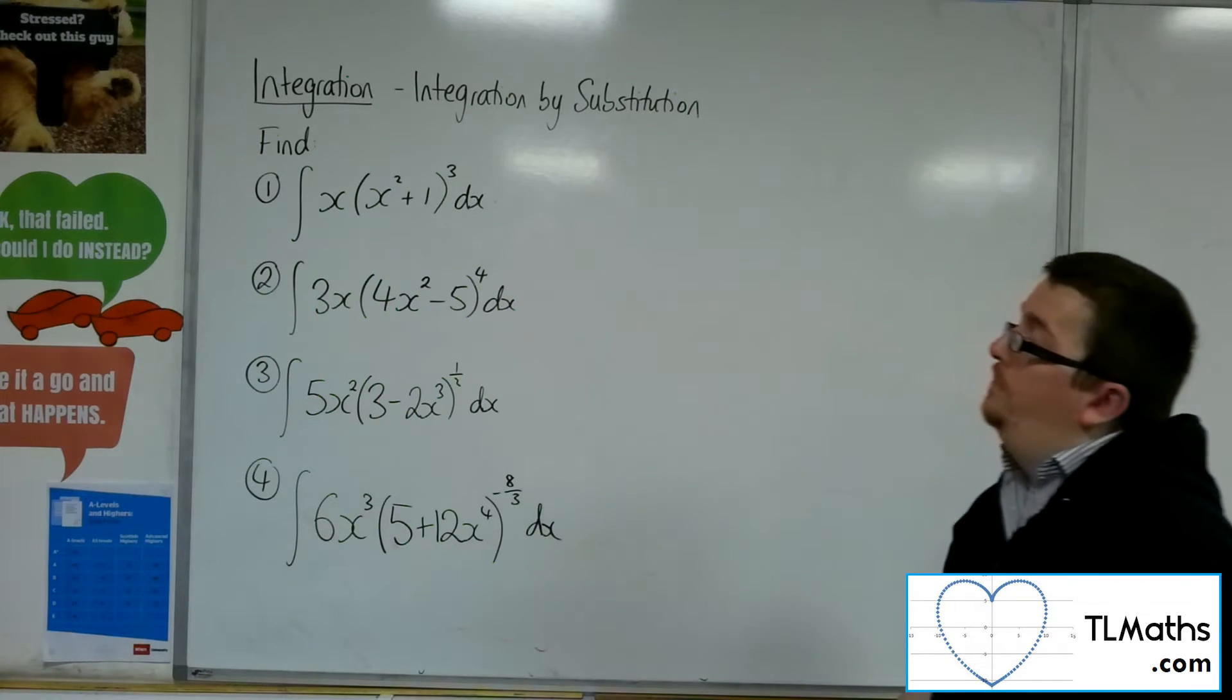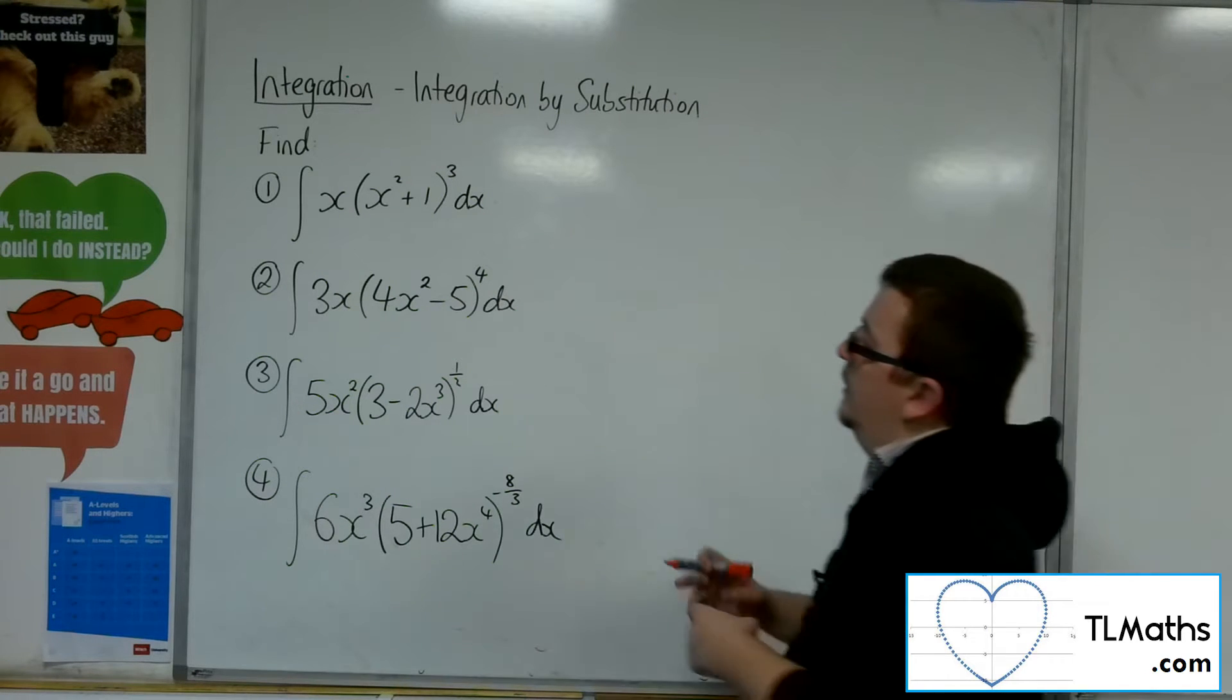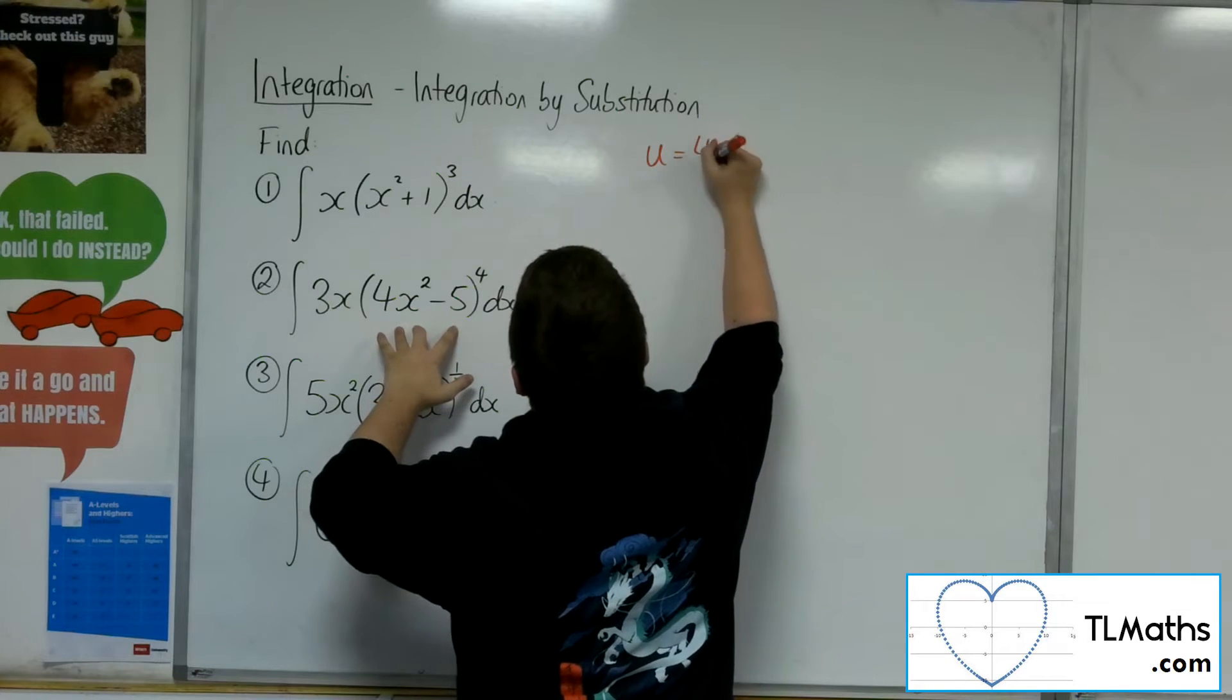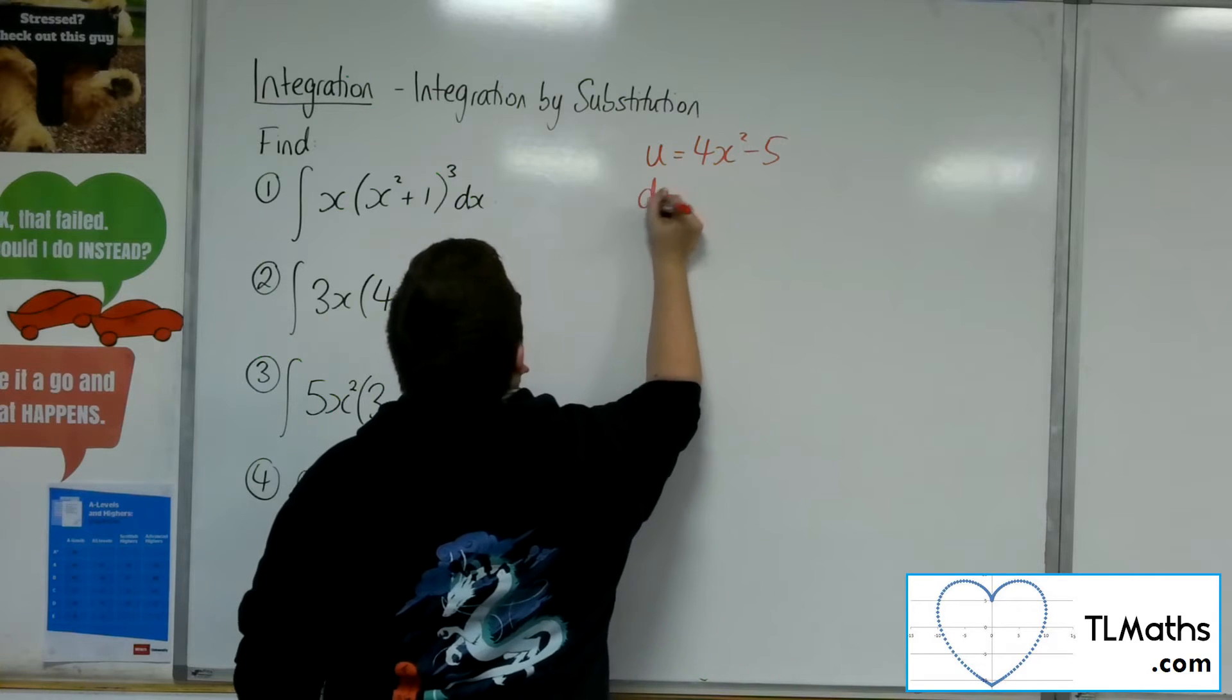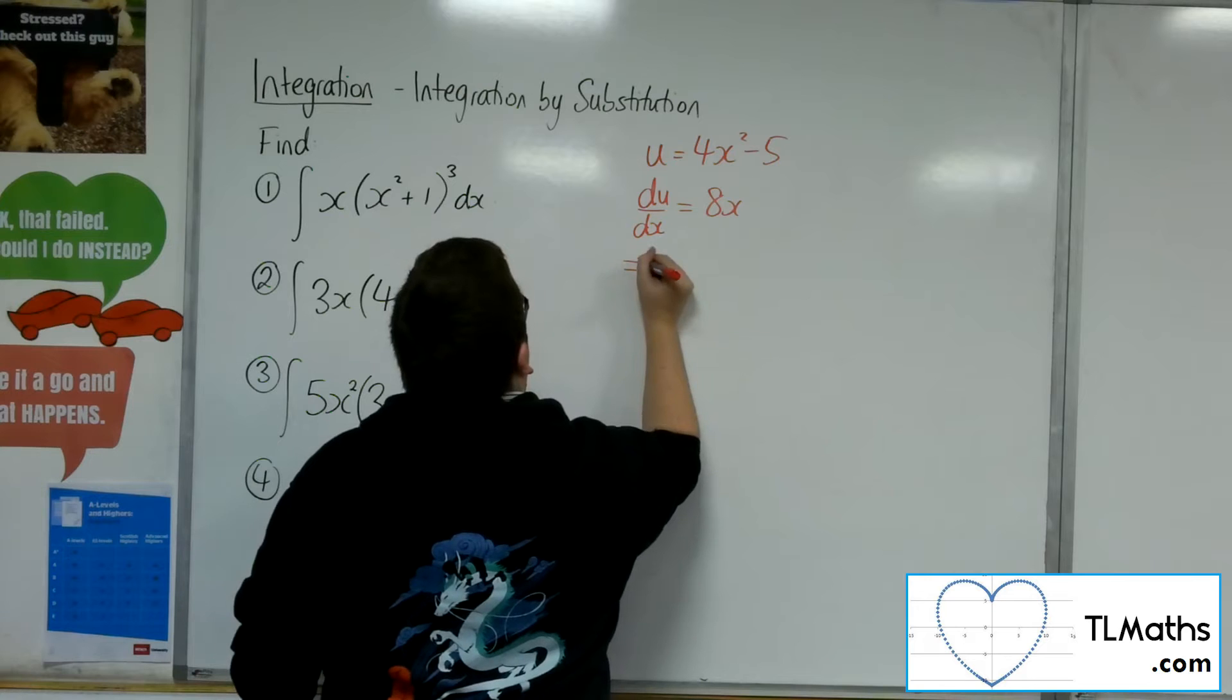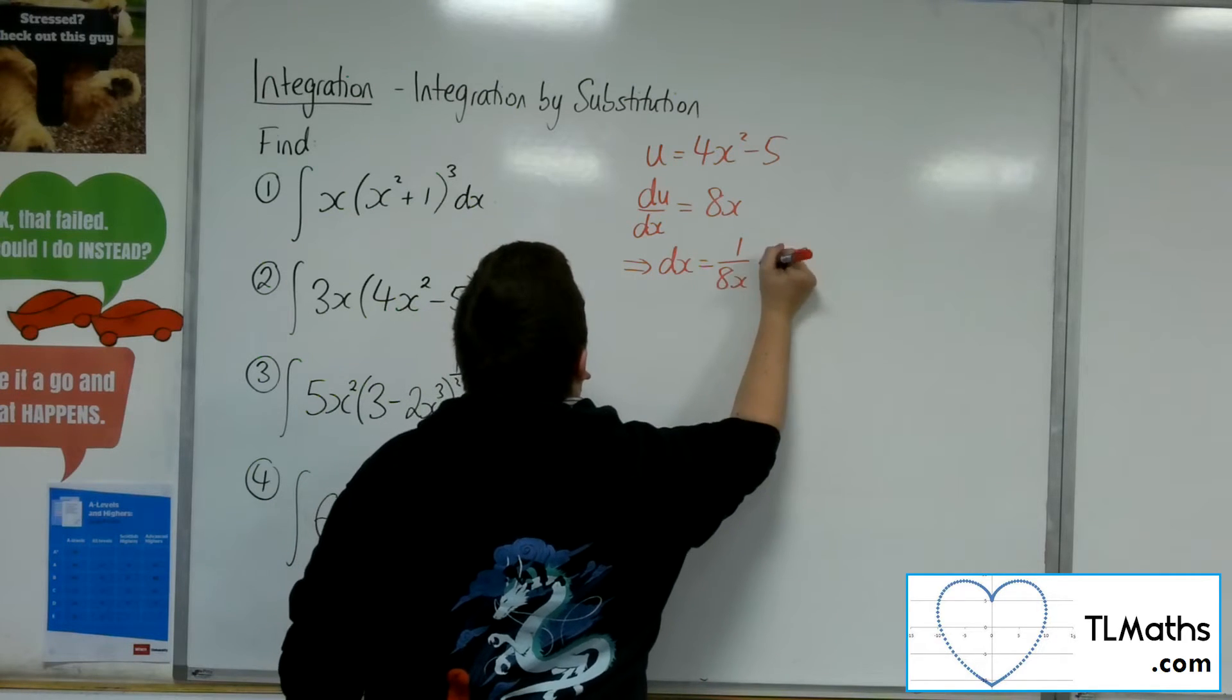So let's have a look at number 2. 3x times 4x squared minus 5 to the power of 4. So the substitution u is 4x squared minus 5. du by dx is 8x. So rearranging, dx will be 1 over 8x du.